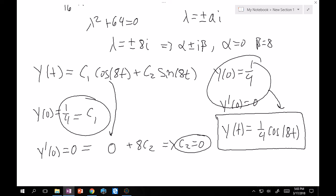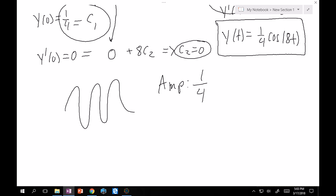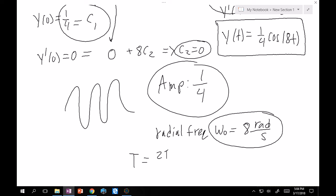And then I believe at the very end, I asked you to find amplitude, radial frequency, and period. So amplitude of the motion, this is a sinusoid. From here, that's just 1/4. It's whatever's in front of it. Radial frequency ω₀ is just whatever's in front of t, so that's 8 radians per second. That's how much this is oscillating. And then minimal period T = 2π/ω₀ = 2π/8 = π/4 seconds is our period here.